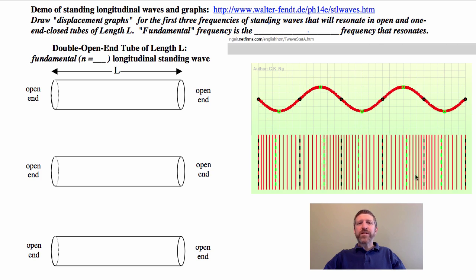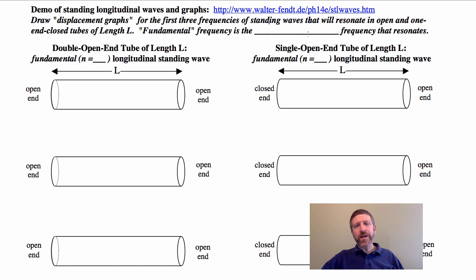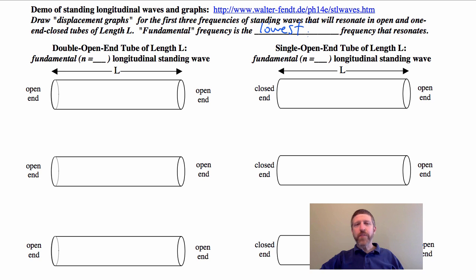We're going to draw the first three frequencies of standing waves that will resonate in open and one-end-closed tubes of some arbitrary length L. The fundamental frequency is the lowest frequency that resonates. If you double that frequency, that's N equals two; if you triple it, it's N equals three. The lowest frequency that resonates here may have more than one antinode, but if you just realize what we're calling the fundamental is simply the lowest frequency that resonates, you'll be all set.